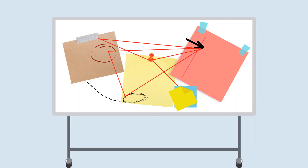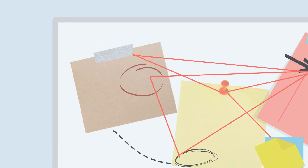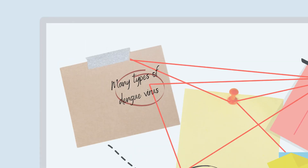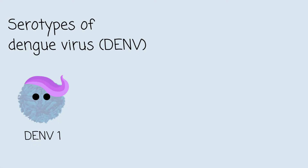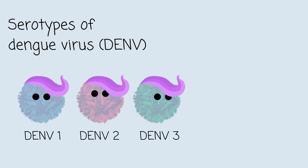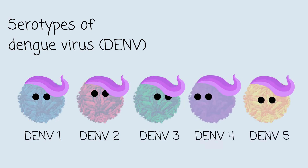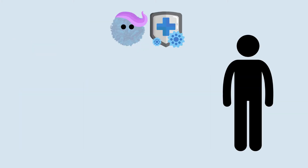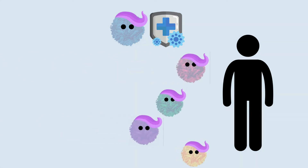There are three main reasons. Firstly, it is because there are many types of Dengue virus. We call them the serotypes of Dengue virus, DENV, and they are given numbers from 1 to 5. In fact, DENV-5 was discovered only recently in October 2013 in Sarawak, Malaysia. The problem with so many types of Dengue virus is that a person who recovered from one type of Dengue virus has immunity only towards that same type of virus.